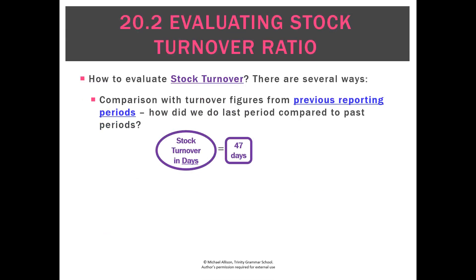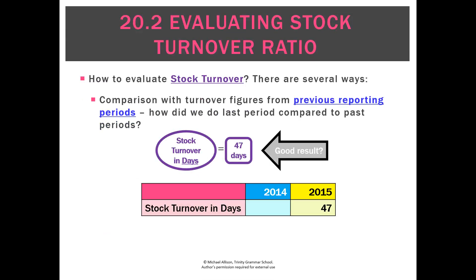Let's compare it to a previous period. This year we achieved a stock turnover in days of 47. Last year it was 31. Is that a good result or a bad result? We're going to say that's a bad result — on average it took us 16 days longer to sell out all our inventory. What about if achieving 47 days this period was after a stock turnover of 64 days last period? We'd say that's a good result — on average we've reduced the time it takes to sell stock by 17 days.